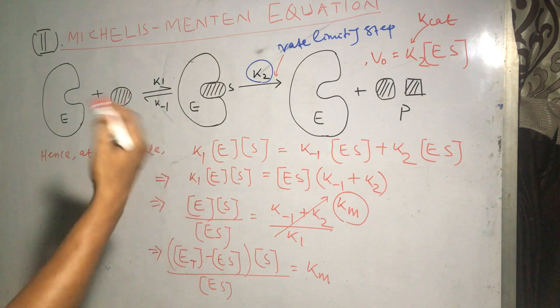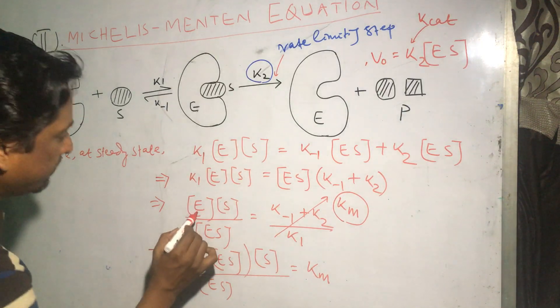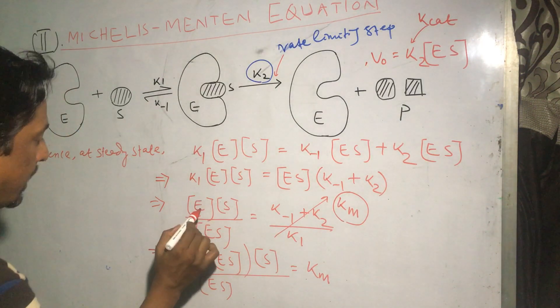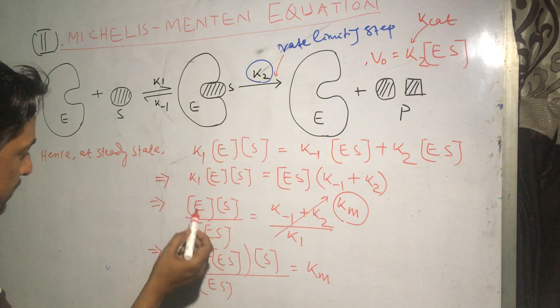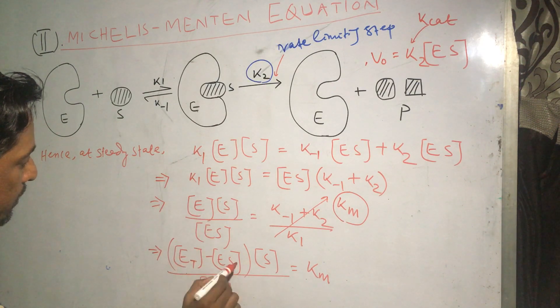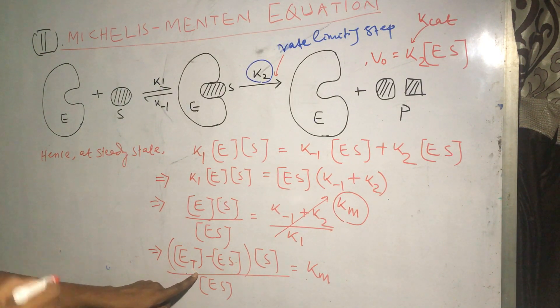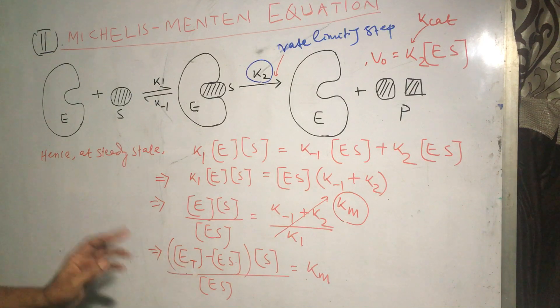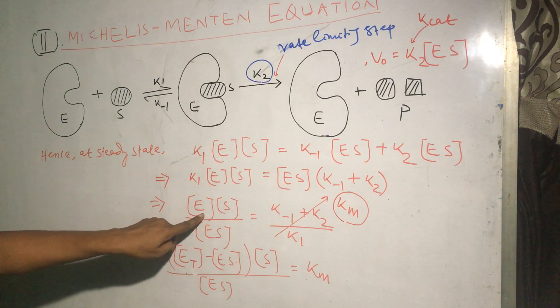Recall from the previous equation that this enzyme concentration, the free enzyme, is given by this equation. The total enzyme, the molar concentration of the enzyme added at the beginning, minus enzyme-substrate complex formed is equal to the concentration of free enzyme.